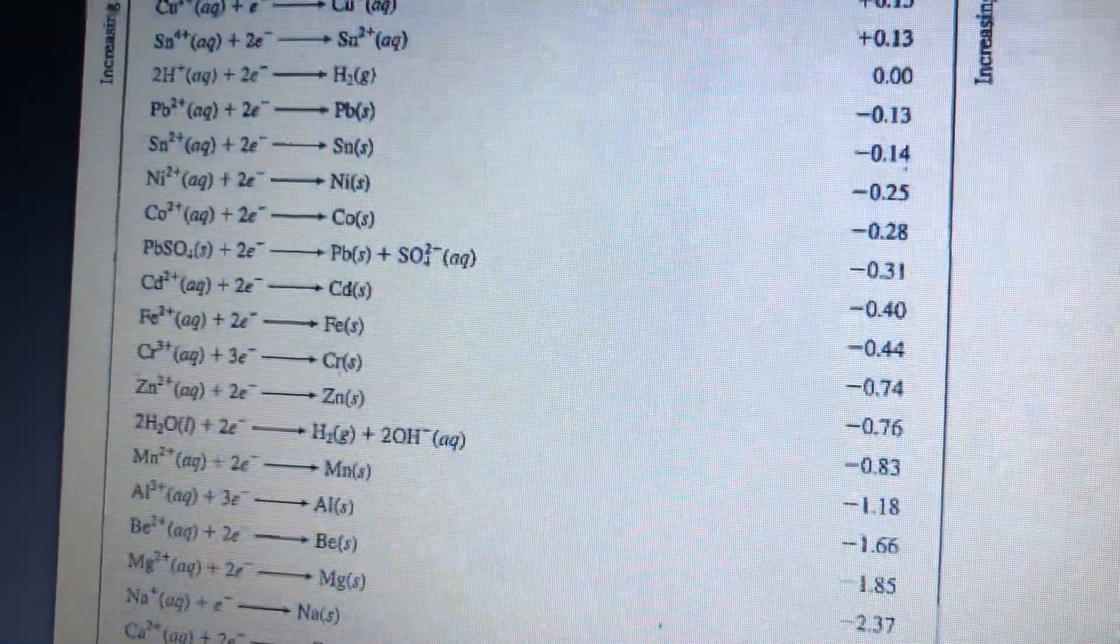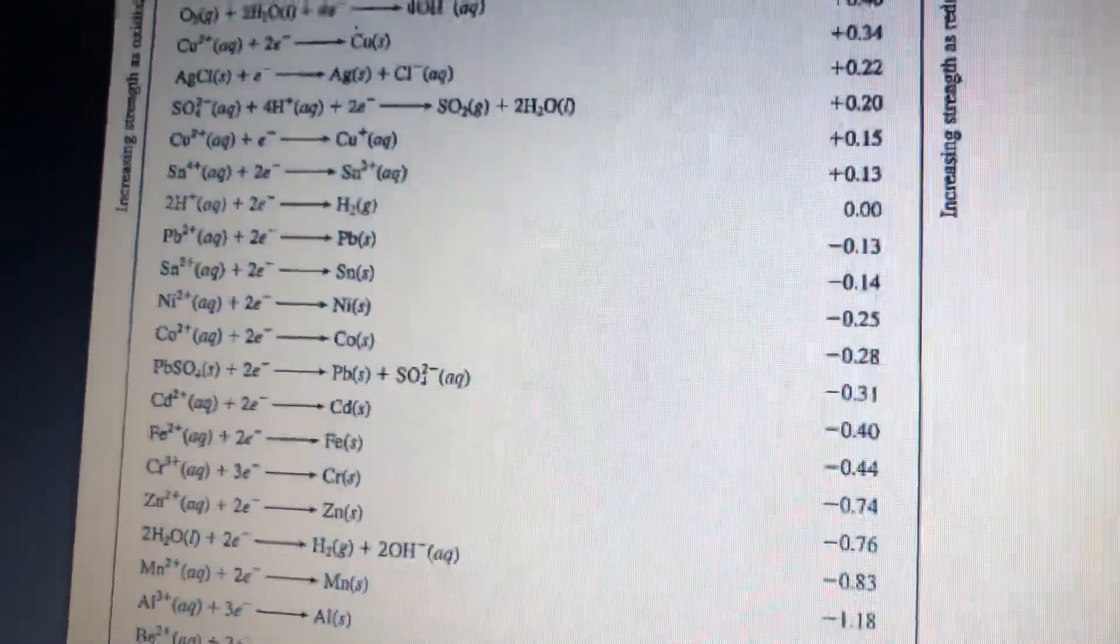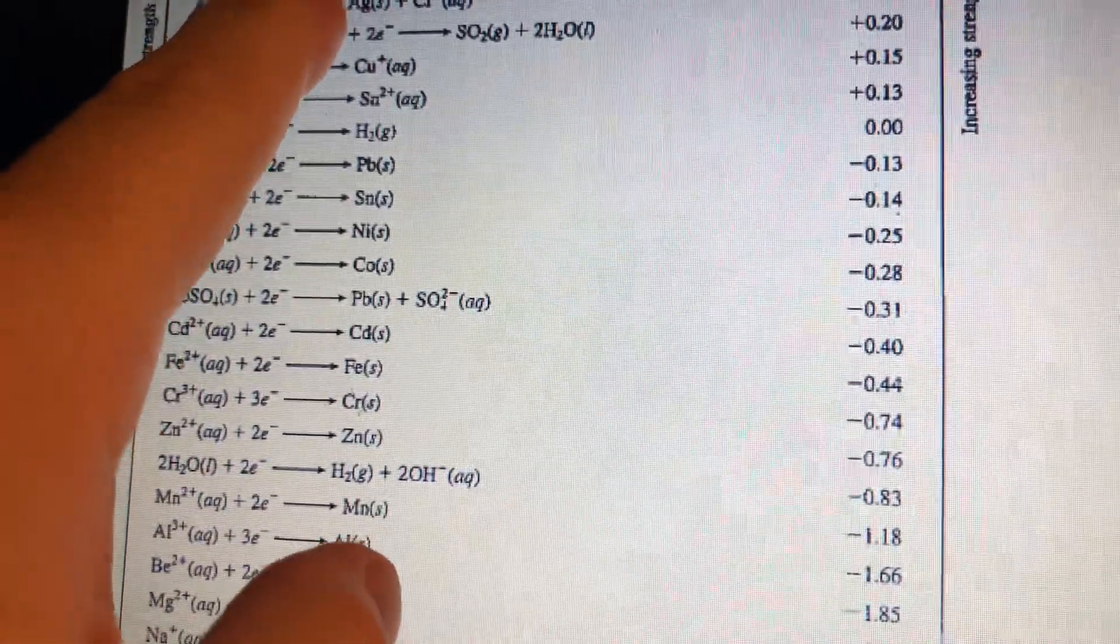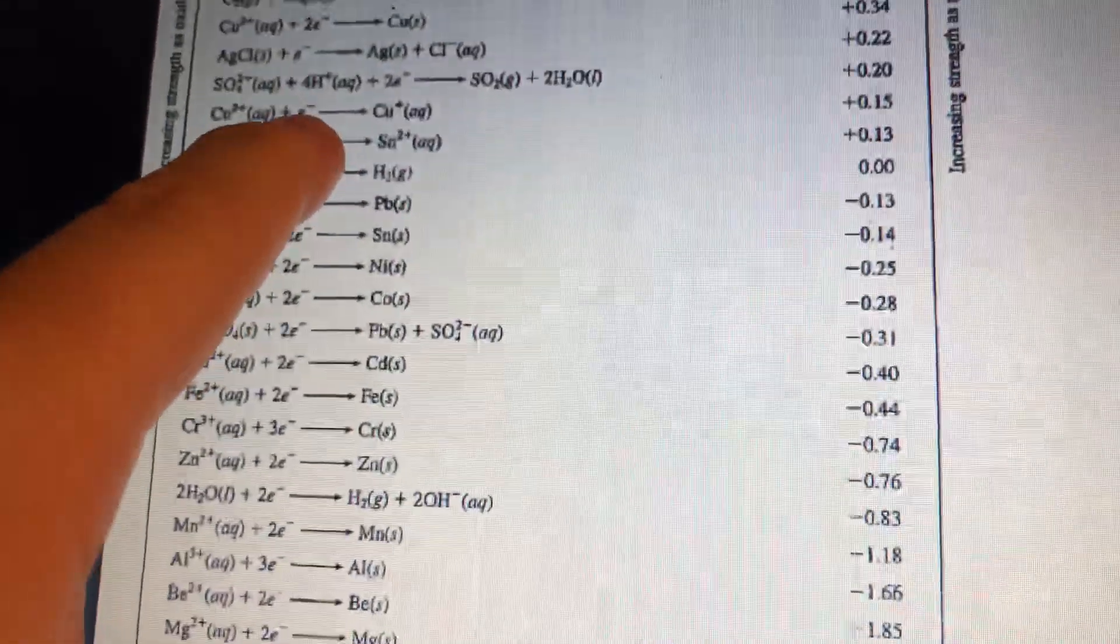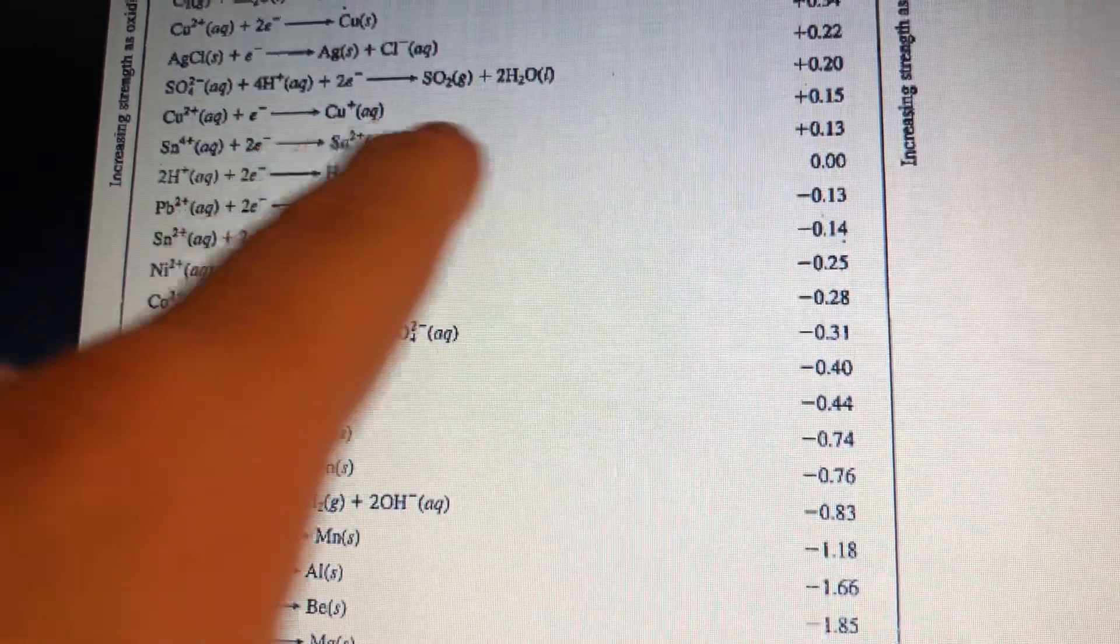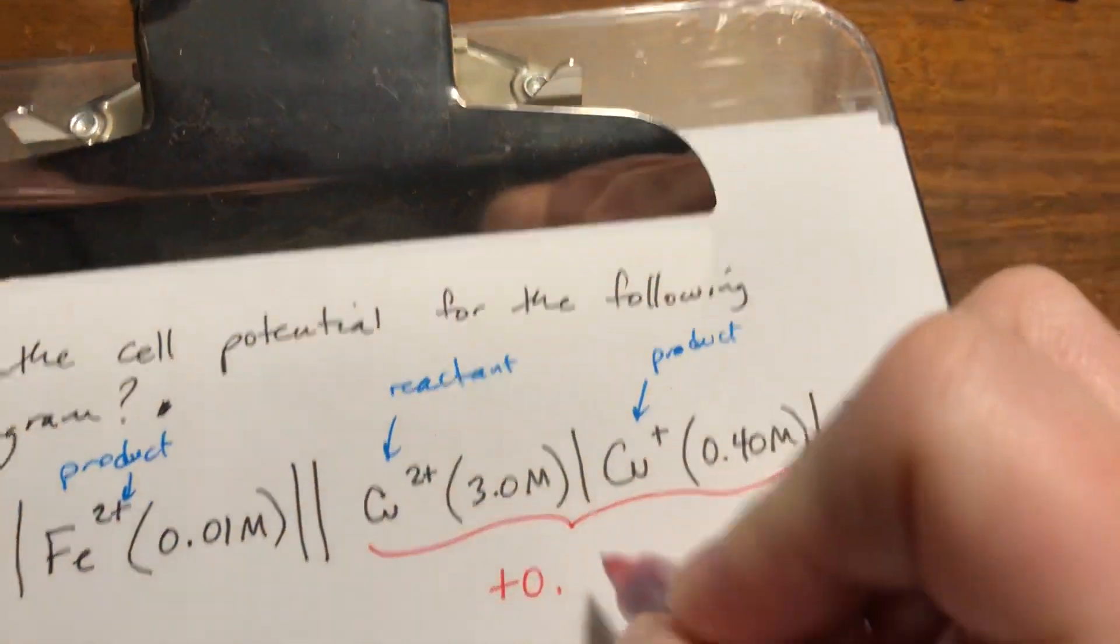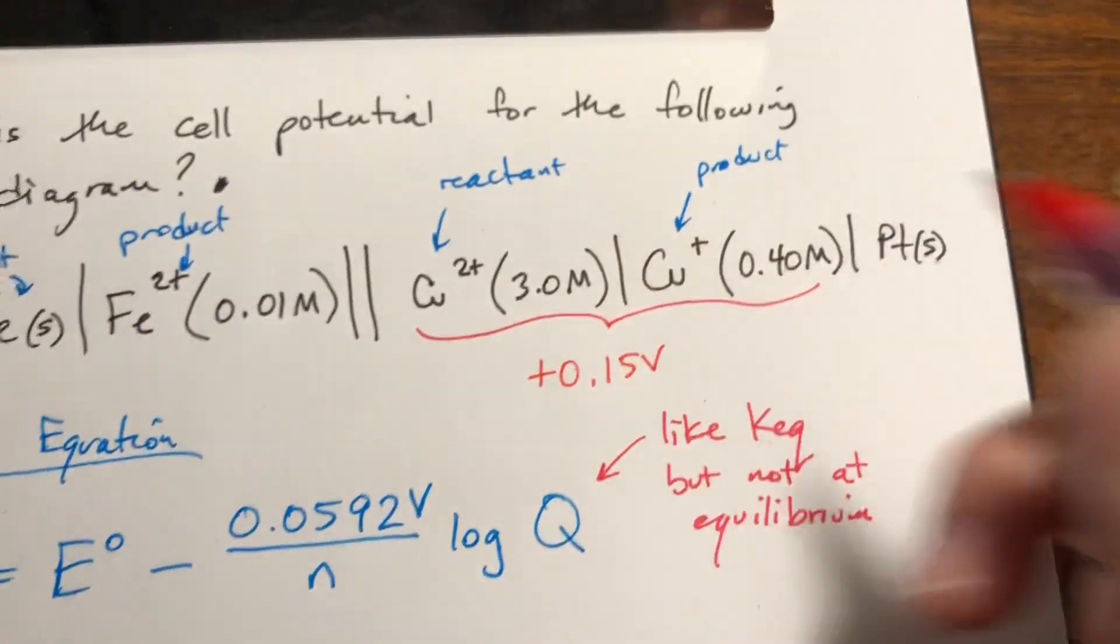I just lost it. There we go. Copper 2+ plus an electron forms copper 1+ and it's positive 0.15. So with standard conditions, this is positive 0.15 volts.